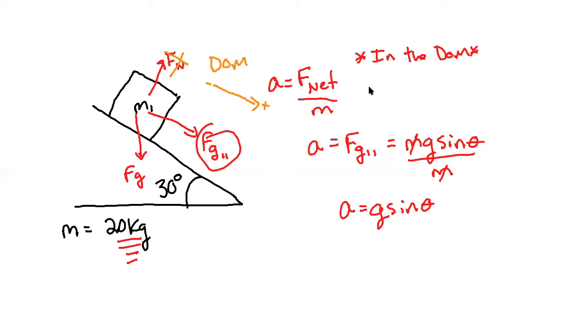Let's substitute in with units. So keep good practice. A is going to be 10 meters per second squared. Sine of 30 degrees, A is then going to equal 5 meters per second squared.